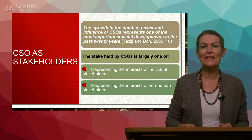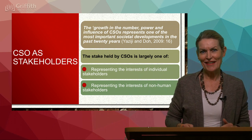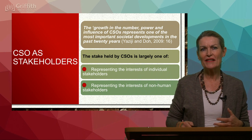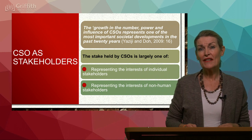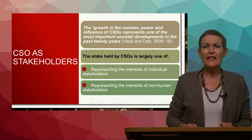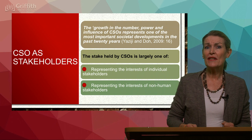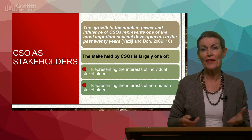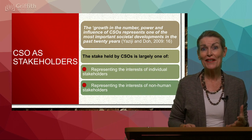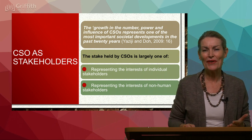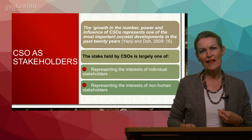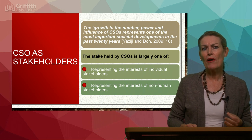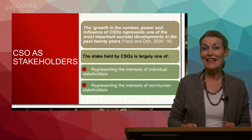We've seen school children walking out of school to voice their concerns over climate — that's an example of the growth in social action of communities coming together. The stakes held by civil society organizations largely involve representing the interests of individual stakeholders, and potentially those kids could become part of or run a civil society organization. CSOs also represent the interests of non-human stakeholders, which we're going to go into particularly in our discussion point today.